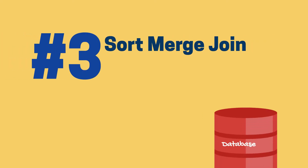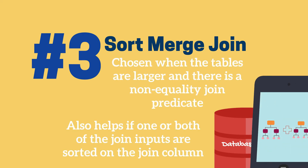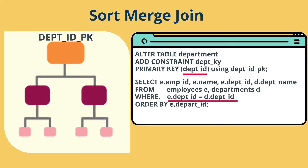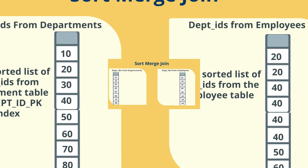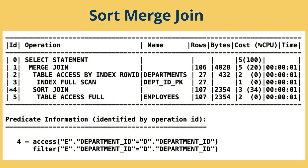The third and final option is a sort merge join. A sort merge join is done when one or both of the inputs into the join is already sorted on the join column — typically when we've got an index with the join columns as the leading edge of it. How it works is we sort both inputs on the join key, then merge the two lists together to complete the join. It's typically chosen when at least one, if not both, of the inputs are already sorted on those join columns because they're the leading edge of an index.